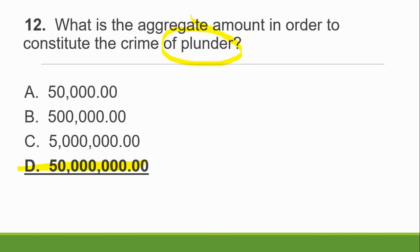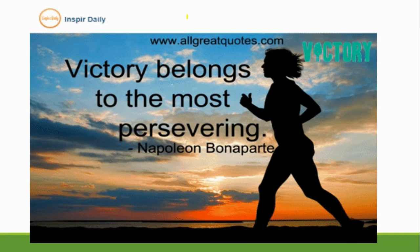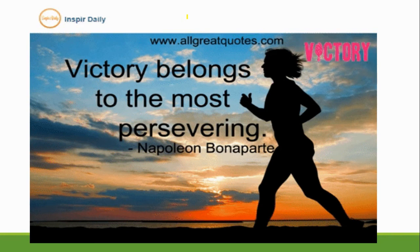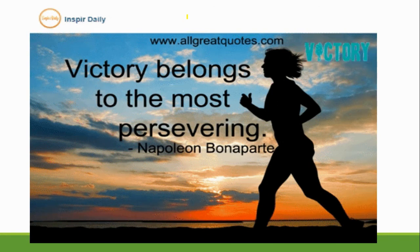Question 11: What is the covered transaction under the Anti-Money Laundering Act? The answer is 500,000 pesos (half a million) — not 50,000, not 5 million, not 50 million. Question 12: What is the aggregate amount required to constitute the crime of plunder? The choices are 500,000 pesos, 50,000 pesos, 500,000 pesos, 5 million pesos, or 50 million pesos. The answer is 50 million pesos — if the ill-gotten wealth reaches 50 million pesos, the case is considered plunder.